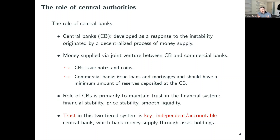The role of central banks feeds back into the idea of trust — primarily to maintain trust in the financial system, including financial stability, price stability, and liquidity smoothing. This trust in the two-tier system is key to the sustainability of the fiat currency concept: independent and accountable central banks that supply money backed by assets.